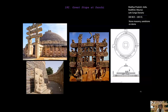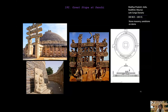This is the Great Stupa at Sanchi, found in Madhya Pradesh, India. It is Buddhist. It was from the Mauryan dynasty where it started and then went into the late Sunga dynasty. It was made from 300 BCE to 100 CE, constructed out of stone masonry with sandstone on the dome.